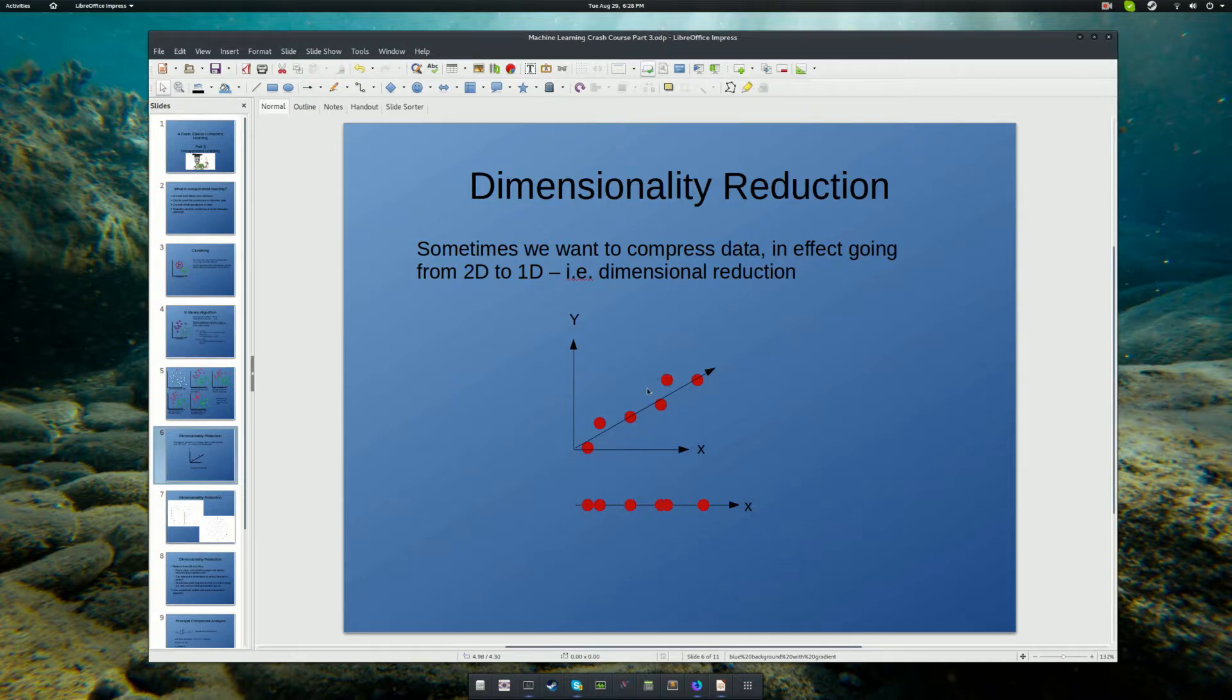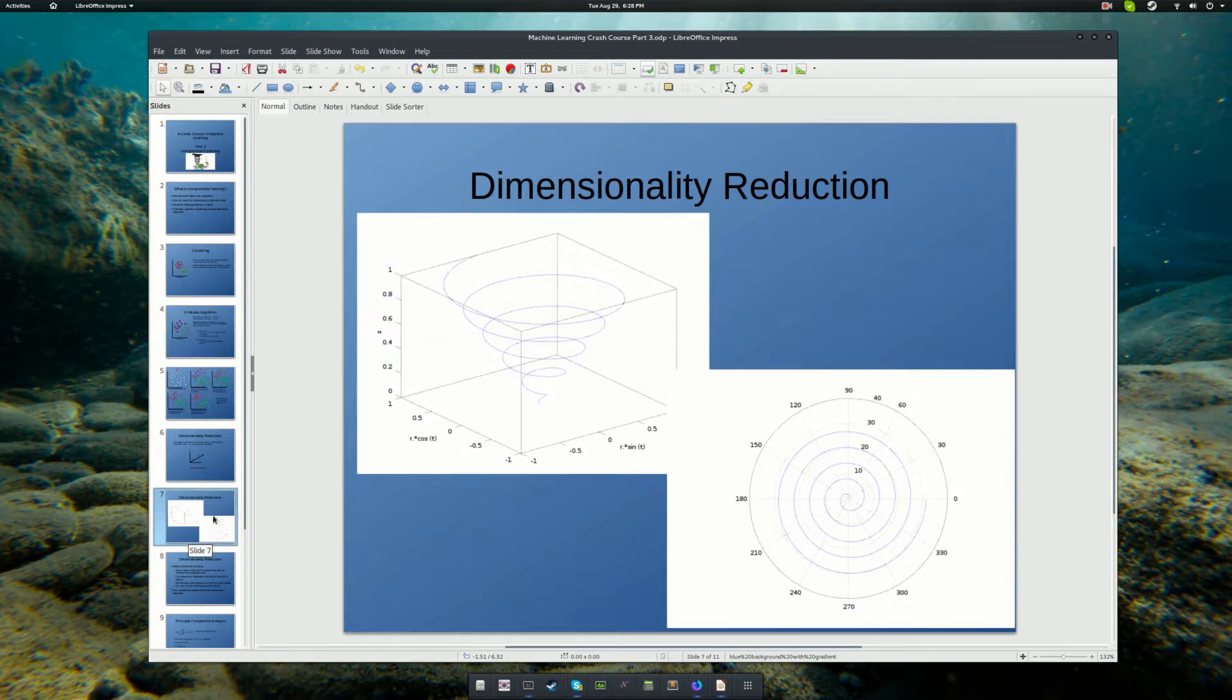Here in this case we have a trivial example of points on a line in two dimensions, y and x, and projecting them straight down onto the x-axis. Less trivially, you can go from three dimensions where you have a helix spiral to a polar plot. And of course, this generalizes to the high dimensional spaces we're used to working with in machine learning type problems. And in fact, this is where it has the most utility.